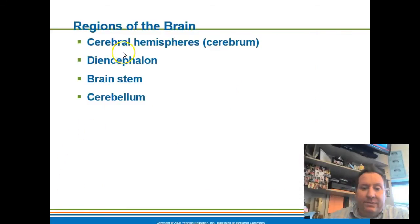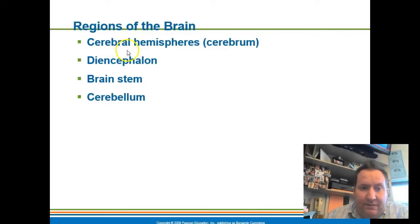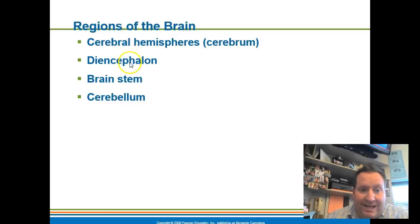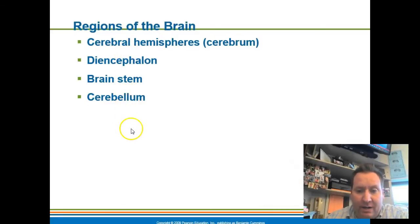So we just went over the major parts of the brain itself. We went over the cerebrum, the diencephalon, the brain stem, and the cerebellum. Those are the four major parts of the brain we're going to be talking about today.